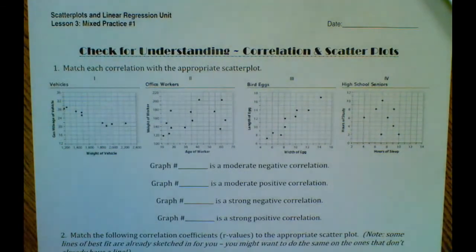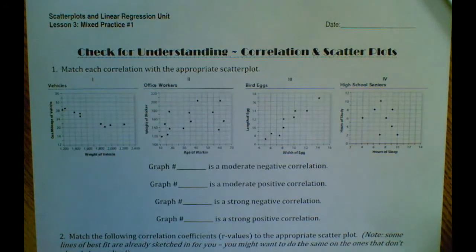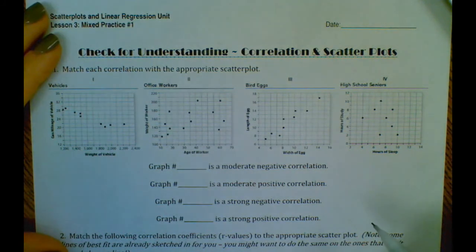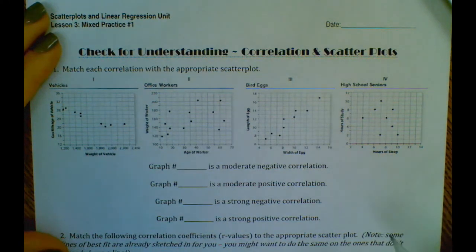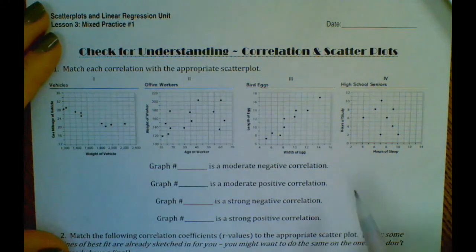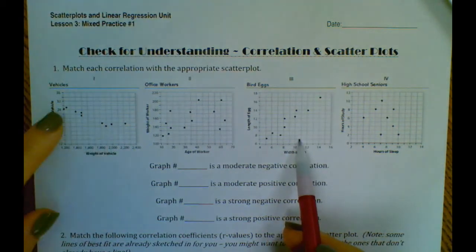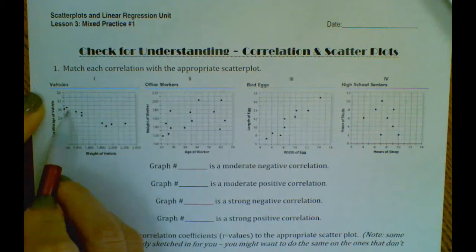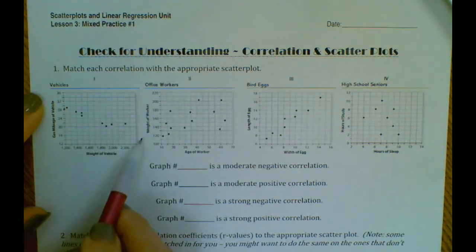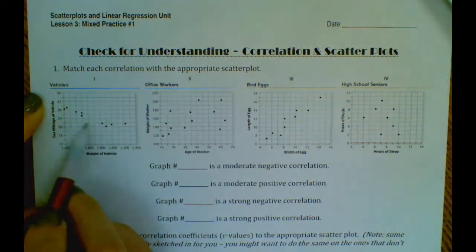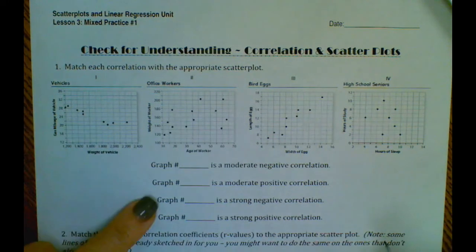Okay group, so we are on our mixed practice number one, lesson three here. It says match each correlation with the appropriate scatterplot. So let's start at the one that's maybe the strongest, maybe closest to like a straight line. So probably between these two, I would say this one's probably a little bit closer. This is negative because it's going down from left to right and it's pretty strong, so strong negative, we would say graph one.